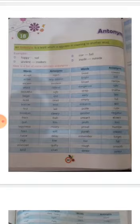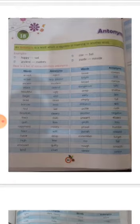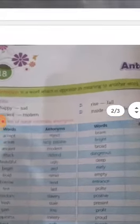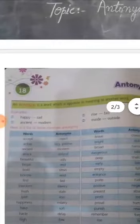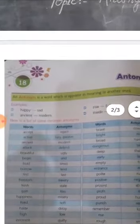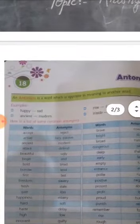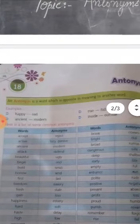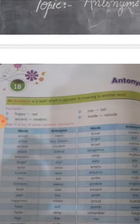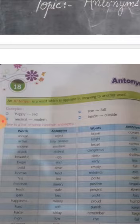Page number 68, topic antonyms. Let's start now. An antonym is a word which is opposite in meaning to another word. Antonyms kise kehte hain? Antonyms us word ko kehte hain agar koi word hai aur uski opposite meaning wala word hai.